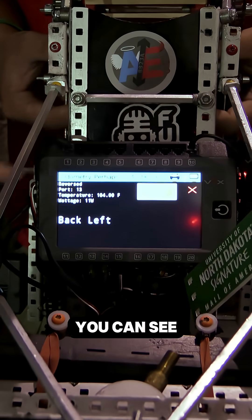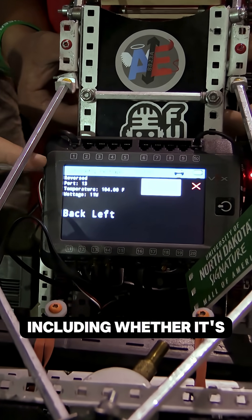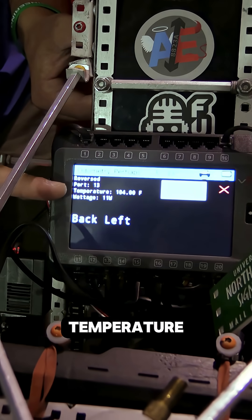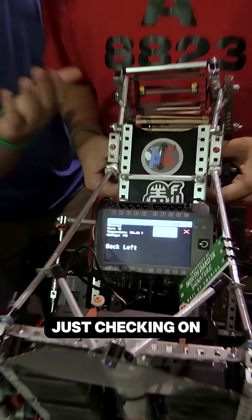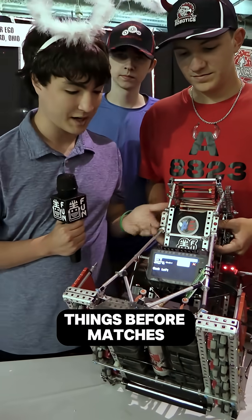If you click on a motor, you can see everything about it, including whether it's reversed, the port, the temperature, the wattage. And this is really helpful during matches, just checking on things before matches.